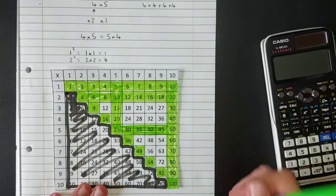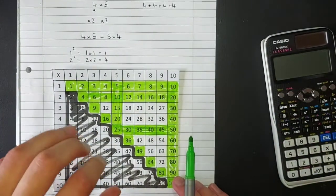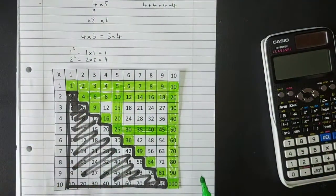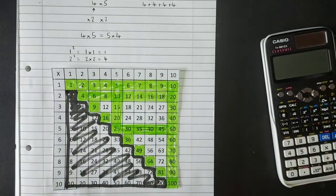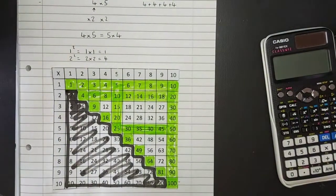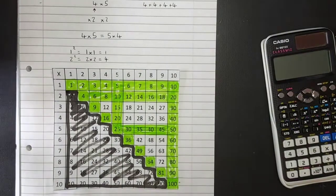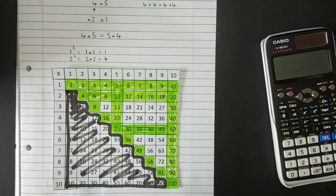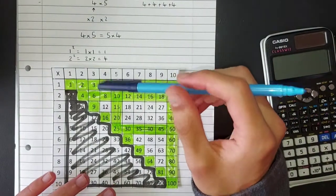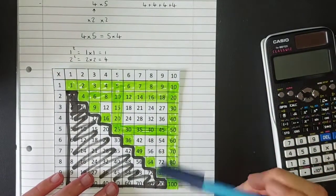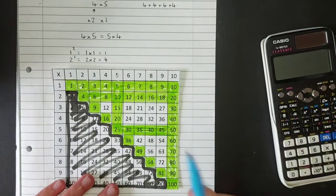So we know our ones, tens, twos, and fives — and because of symmetry, those same facts cover the corresponding columns too. We also know our square numbers. This isn't leaving many left. For the remaining ones, you need just a little bit of extra working — but there's always a route from a multiplication you know to one you don't.